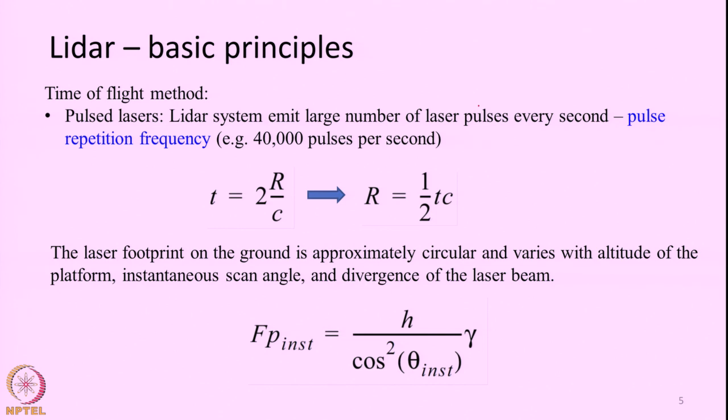The major factors to keep in mind in the time of flight method are: the precise and accurate measurement of time, and our knowledge about the velocity of light as it travels through different media. Pulsed lasers are what they use — the system emits a large number of pulses every second. Some ground-based systems operate at 10,000 to 40,000 pulses per second; some satellite-based systems are in the order of about 10,000 pulses per second.